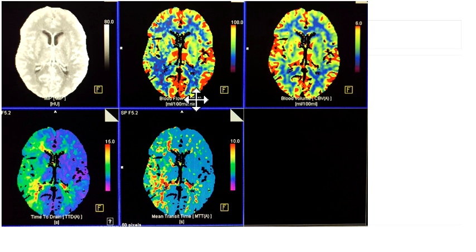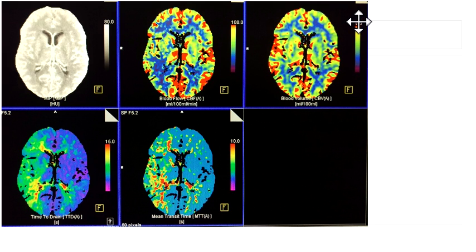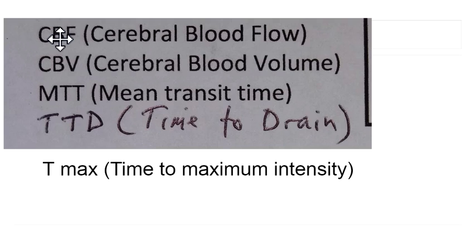These are the maps made in the scanner. CBF — cerebral blood flow map — with units up to 100. Then the CBV map — cerebral blood volume — with units up to 6. Time to drain maps in seconds, with units up to 15. And then mean transit time in seconds, with units up to 10. CBF stands for cerebral blood flow, CBV for cerebral blood volume, MTT for mean transit time, TTD is time to drain, and some scanners generate a Tmax — time to maximum intensity.